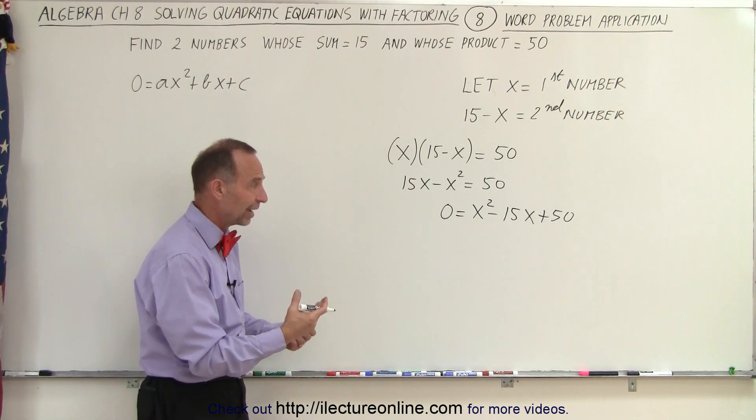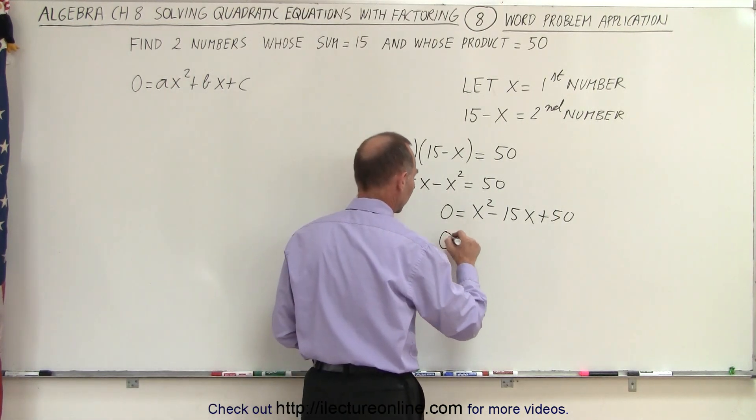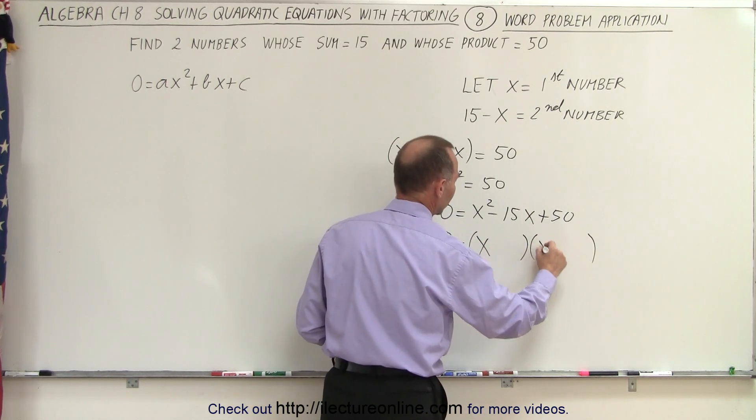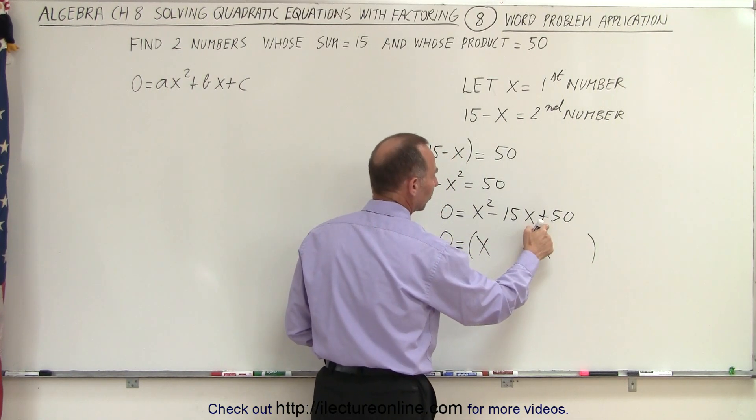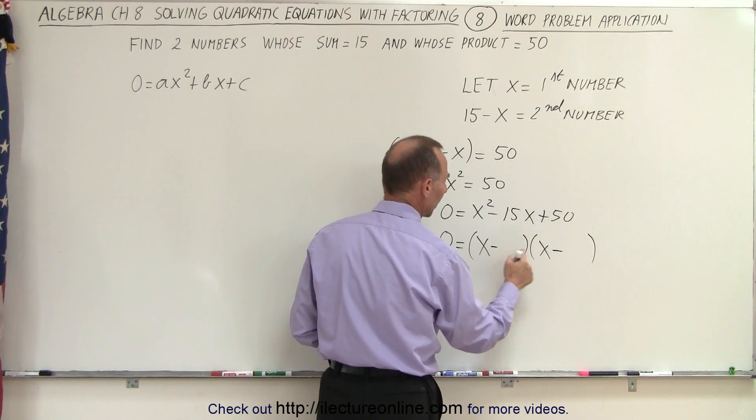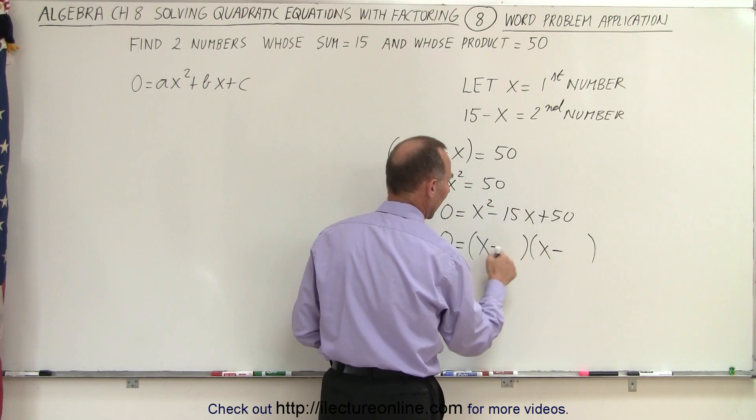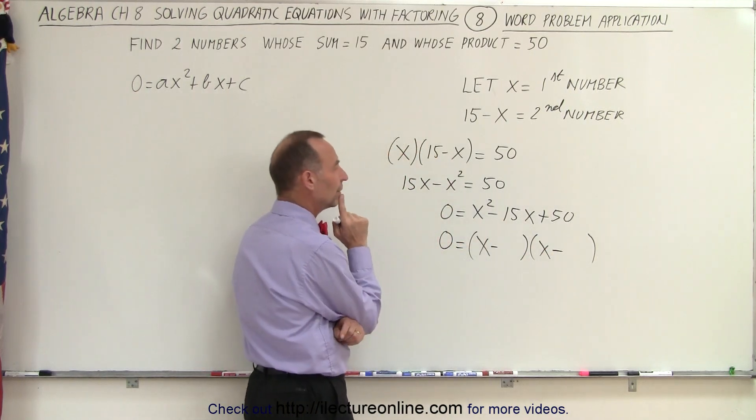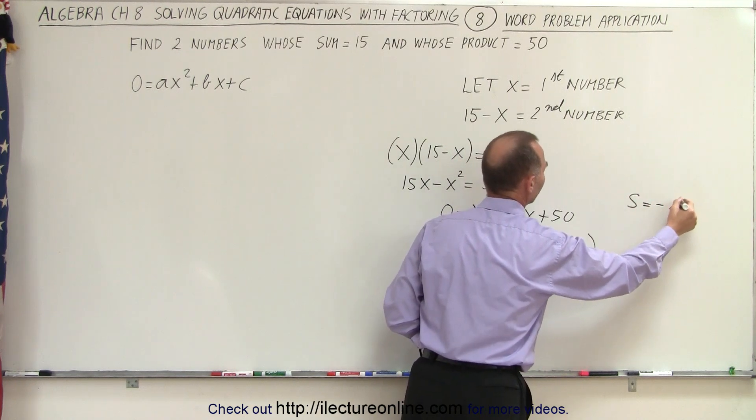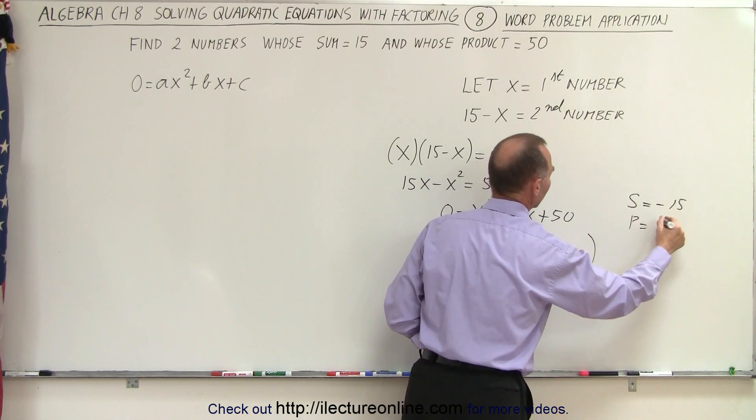Now we can solve that by factoring. So we'll write this as 0 is equal to x and x. Now notice if this is positive and this is negative, that both numbers must be negative. When I multiply I get a positive result, when I add I get a negative result. But now I'm looking for two numbers whose sum equals minus 15 and whose product is equal to 50.